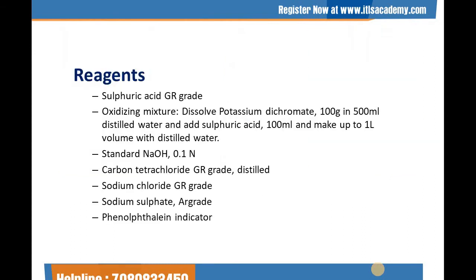The main reagents required for this are sulfuric acid GR grade, and oxidizing mixture — dissolve 100 g of potassium dichromate in 500 ml of distilled water, add 100 ml sulfuric acid, and make up to 1 litre with distilled water. Also required: standard NaOH of 0.1 normality, carbon tetrachloride GR grade, sodium chloride GR grade, sodium sulphate R grade, and phenolphthalein indicator.